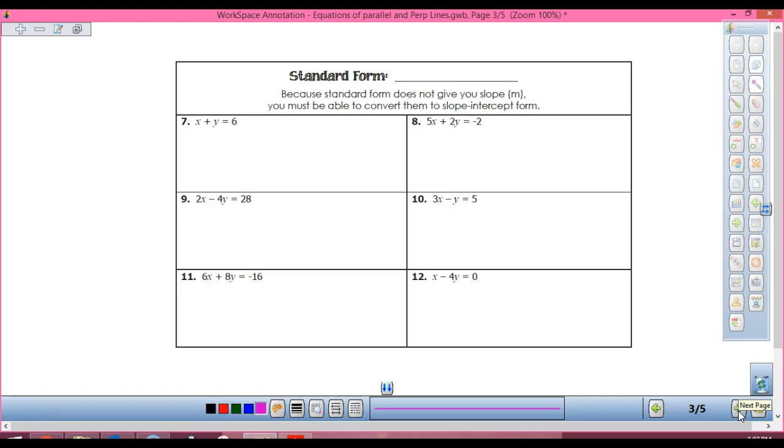Alright, standard form. This one we don't spend a lot of time on. Ax plus By equals C. And usually the reason why we even study standard form is to rearrange it to get y by itself.